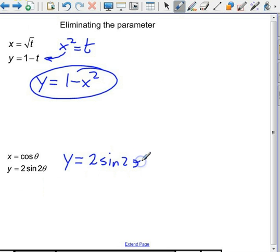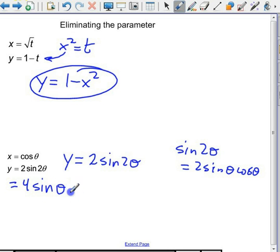Well, hopefully you remember that the sine of 2 theta is equal to 2 sine theta cosine theta. So y will equal 4 sine theta cosine theta. And then I'm going to square both sides. So y squared is equal to 16 sine squared theta cosine squared theta.